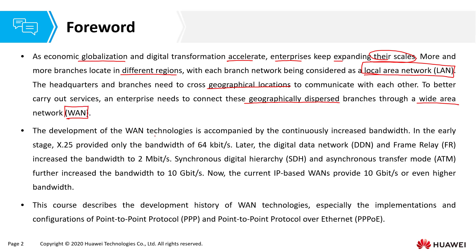The development of wide area network technology is accompanied by the continuously increased bandwidth. In the early stage, X.25 provided only the bandwidth of 64 kilobits per second. Later on, DDN and frame relay networks increased the bandwidth to about 2 megabits per second. Synchronous digital hierarchy (SDH) and asynchronous transfer mode (ATM) further increased the bandwidth to about 10 Gbps. Now, the current IP-based ones provide 10 Gbps or even higher bandwidth.